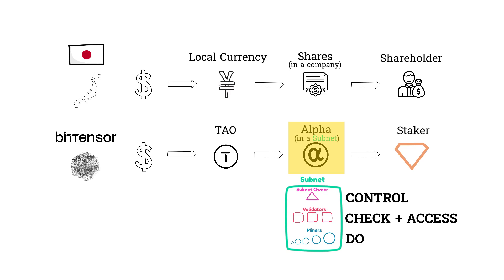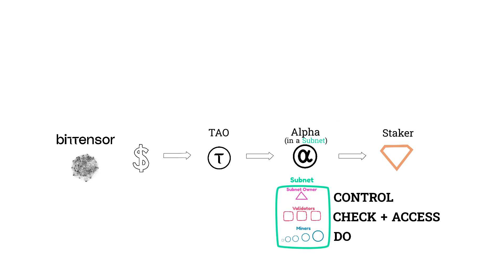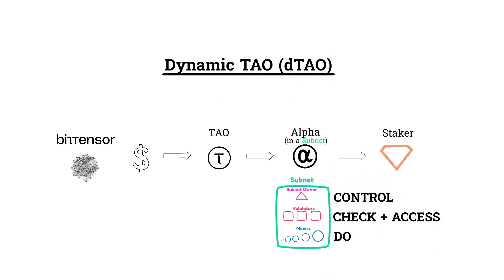Now this whole analogy explains DTAU. DTAU isn't a token — it stands for dynamic tau. It's just the name of the most recent BitTensor chain upgrade that tokenizes the value of subnets into alpha, and allows for market dynamics to govern emissions.